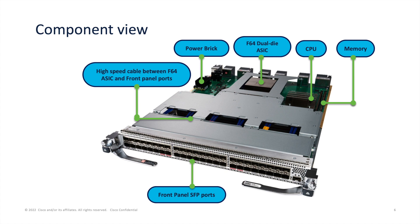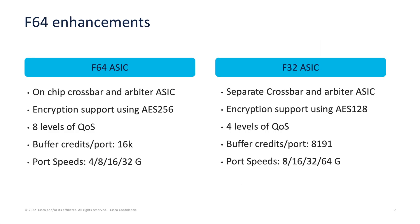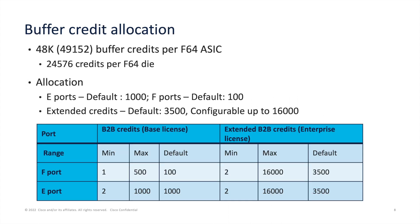The crossbar and arbiter are integrated on the chip ESIC. The encryption supported is now AES-256, up from AES-128 previously, and there are 8 levels of QoS support. For buffer credits, the 64GB module supports 49,152 buffer credits per module — that means 16,000 buffer credits per port, compared to 8,191 in the 32GB module.